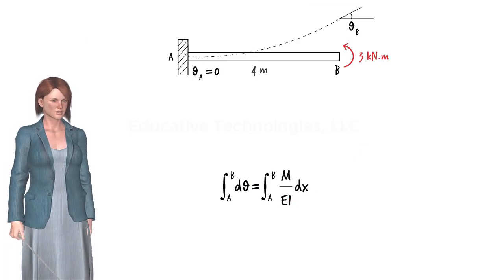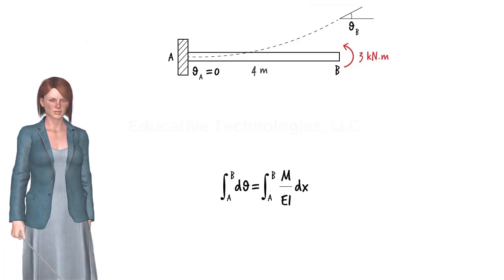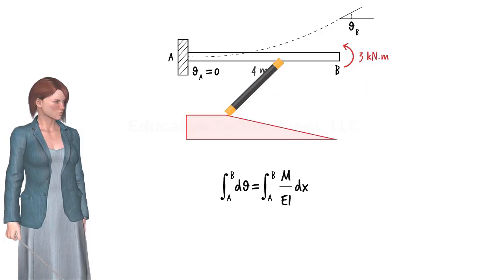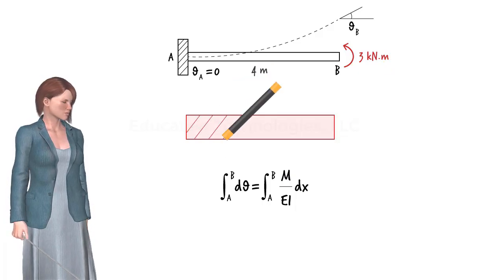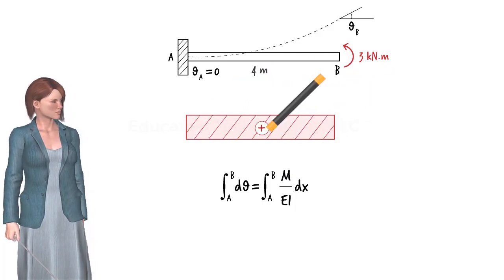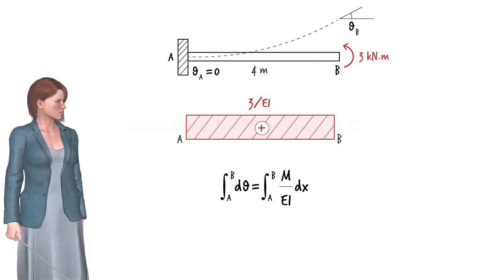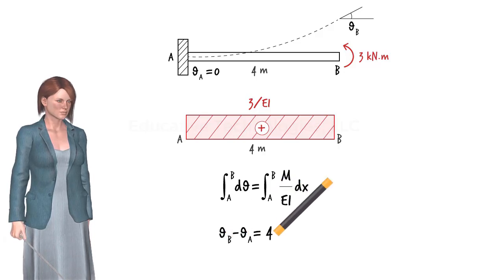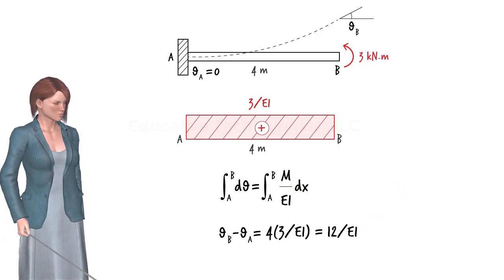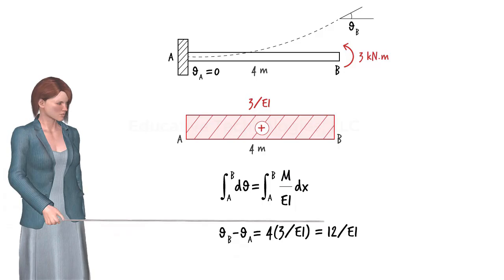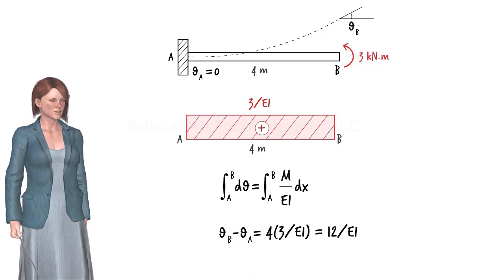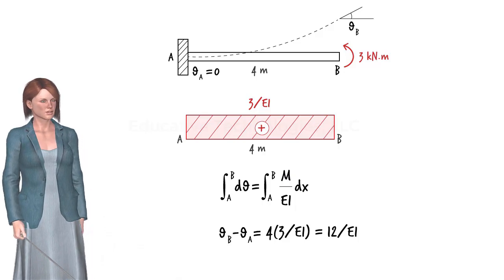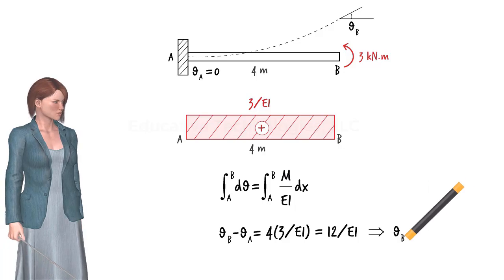Now that we know the basis for the theorem, let's use it to calculate the end rotations for the beam. The moment over EI diagram for the cantilever beam gives us our equation, where 12 over EI is the area under the M over EI diagram between A and B. And since theta A is 0, the equation gives us theta B.